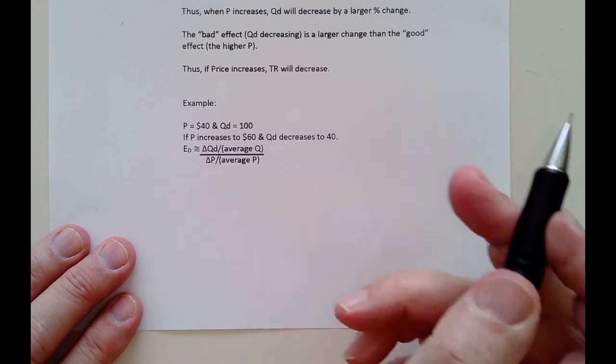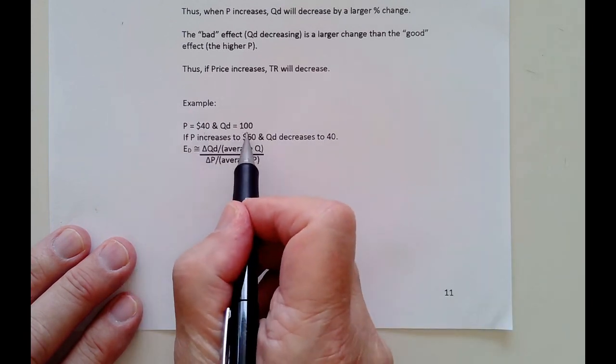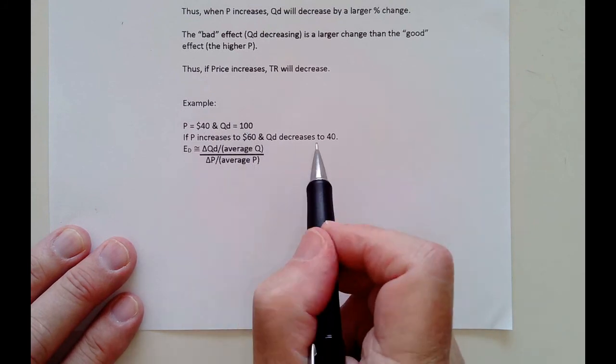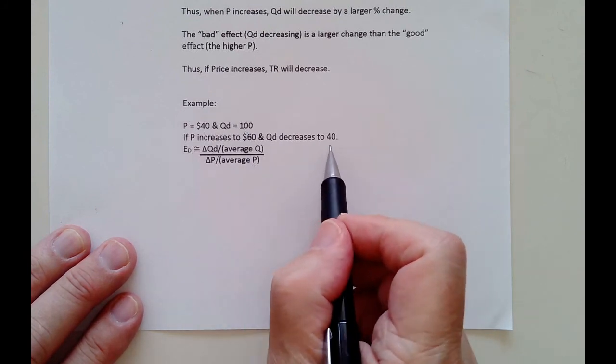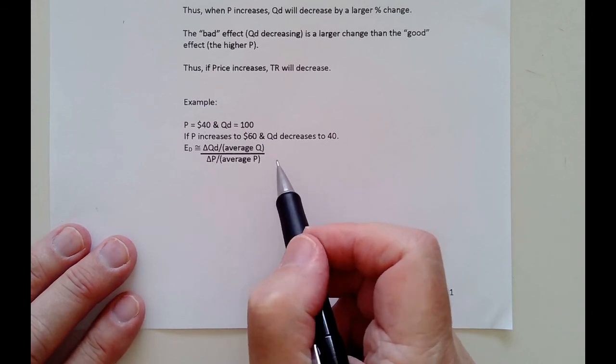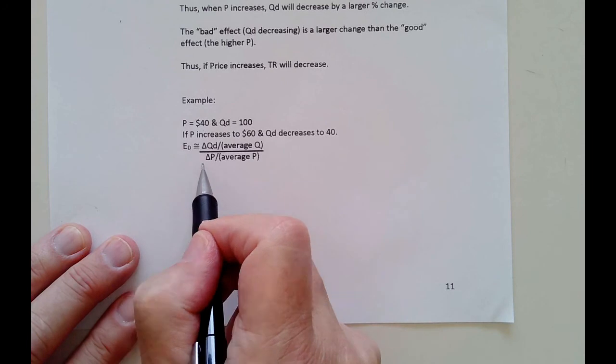So if you raise your price, your total revenue will decrease. And that's always the case if the demand is elastic. Let me show this. Let's say we have a case where we have a price of $40 and a quantity demanded of 100. And then we're going to increase our price to $60 and our quantity demanded is going to decrease to 40. Now before I go any further, I want to make sure this is indeed elastic. It looks like it is because we have a large change in our sales, but I want to confirm it by using the midpoint form.